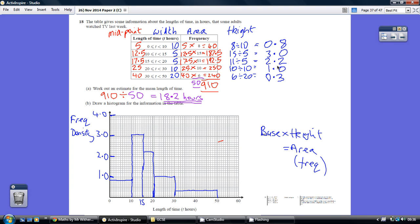Choose a suitable scale. The biggest we've got to go up to is 3, so I've gone 1, 2, 3, 4. Then it's simply creating our rectangles. The first one is 10 along, 0.8 up. Second one is 5 along, 3 up, and so on.